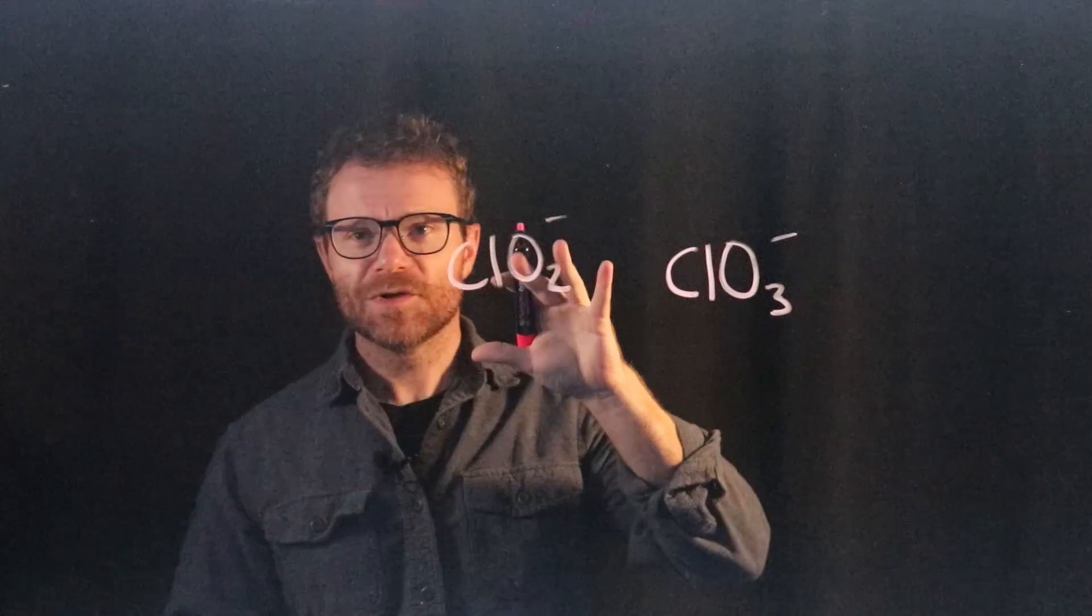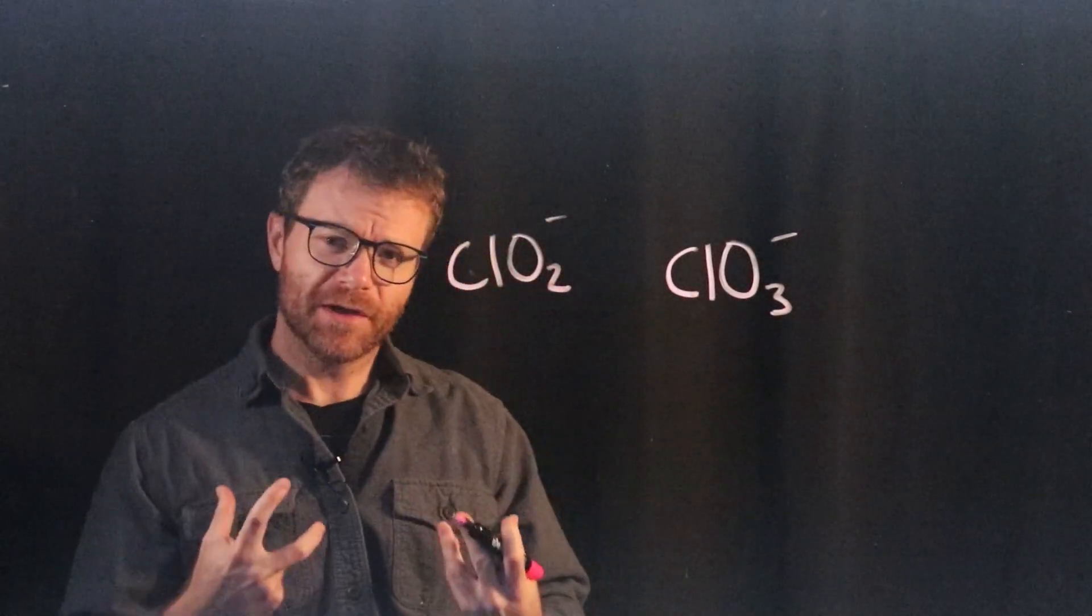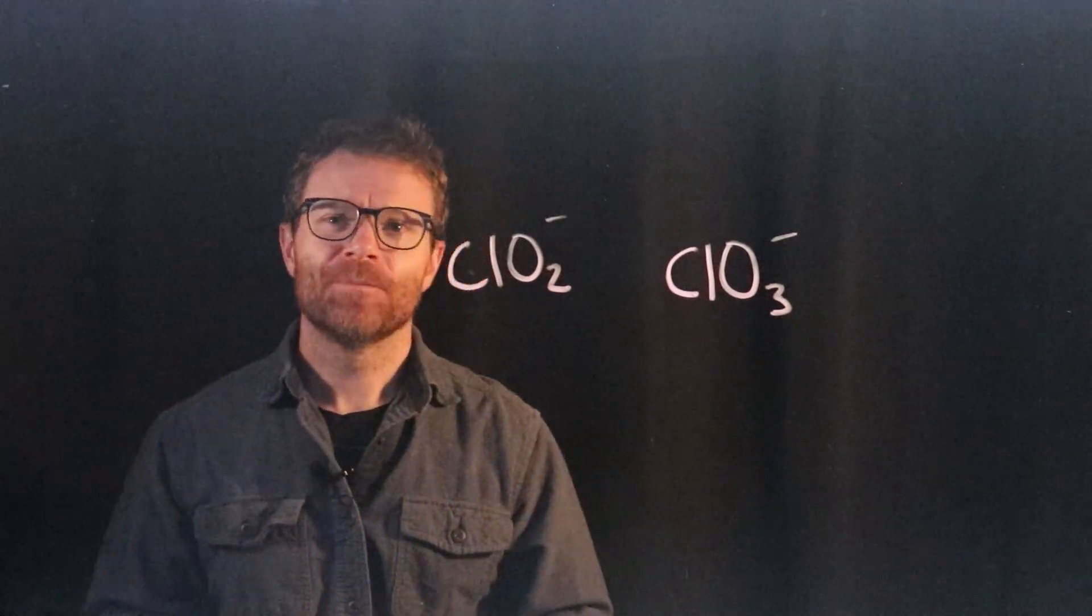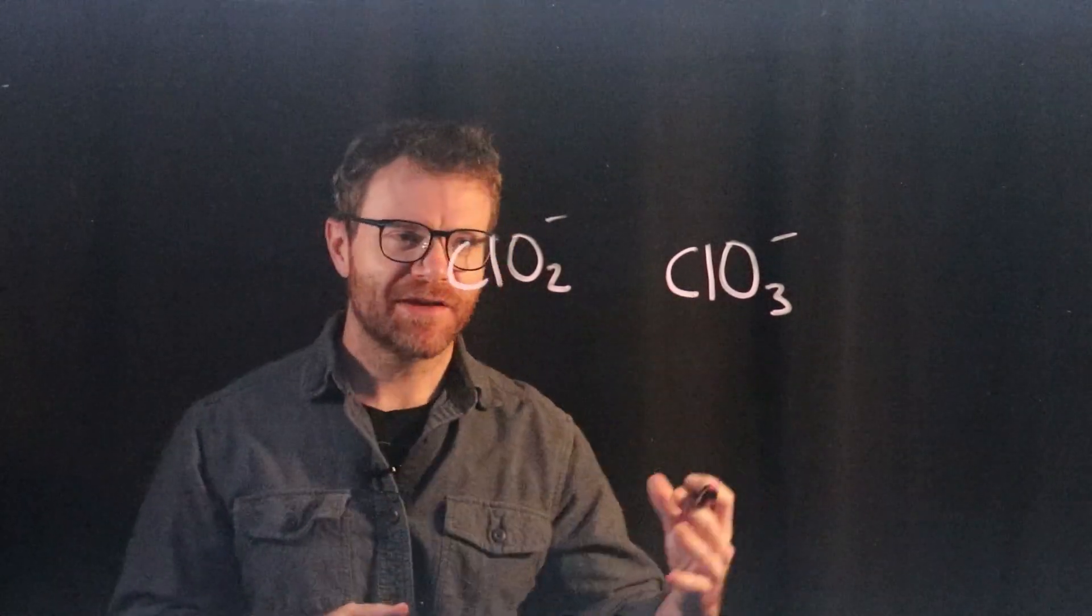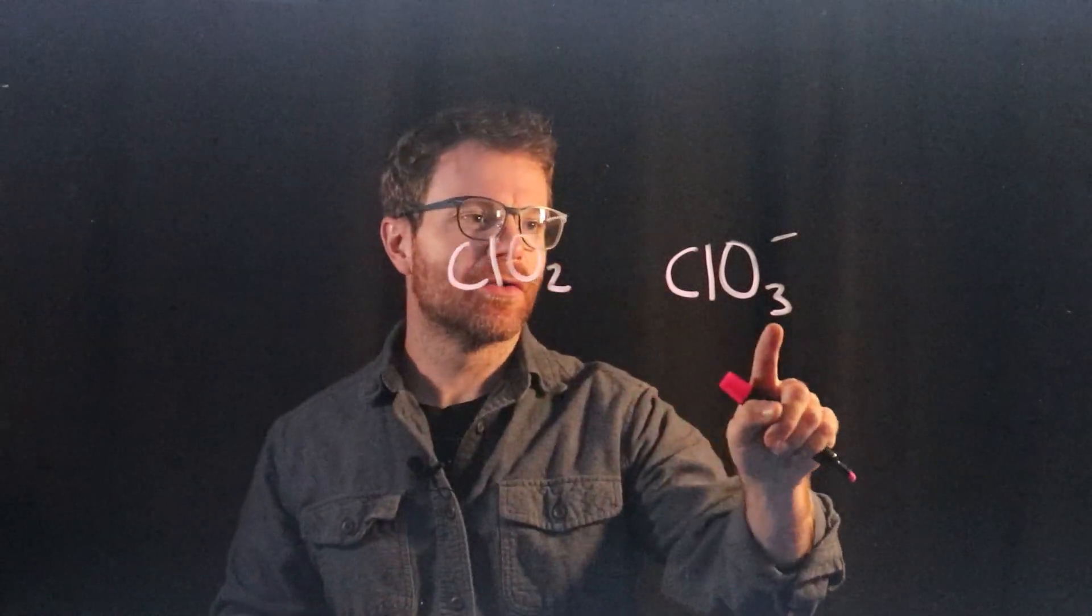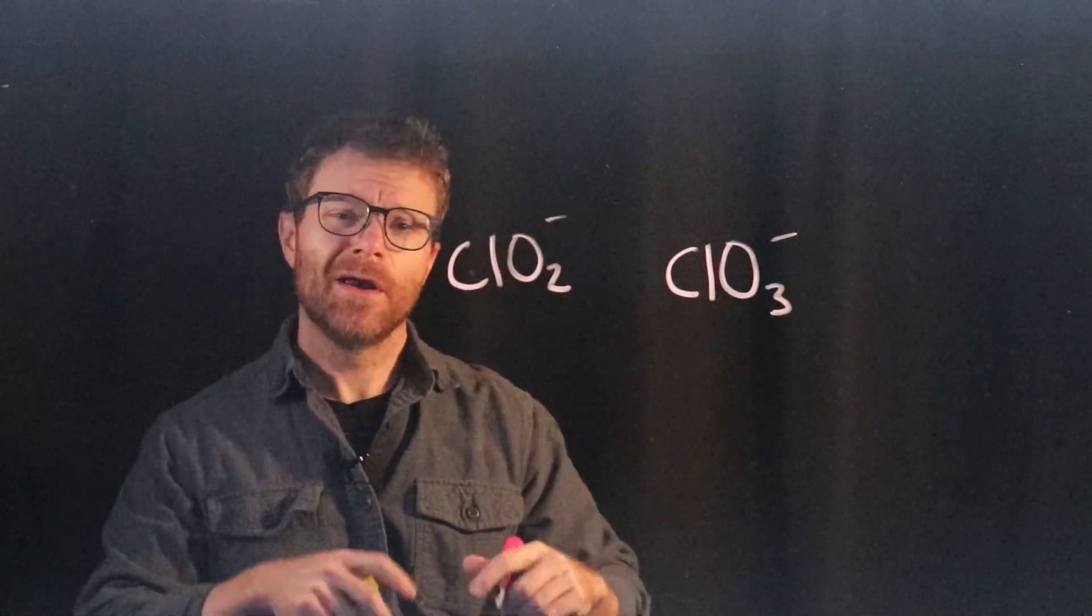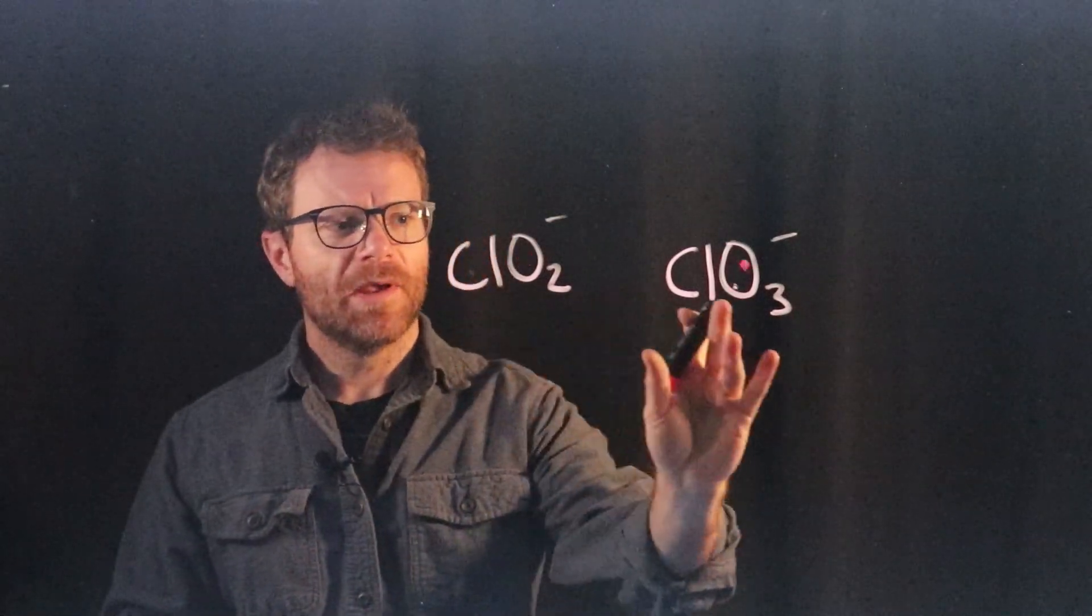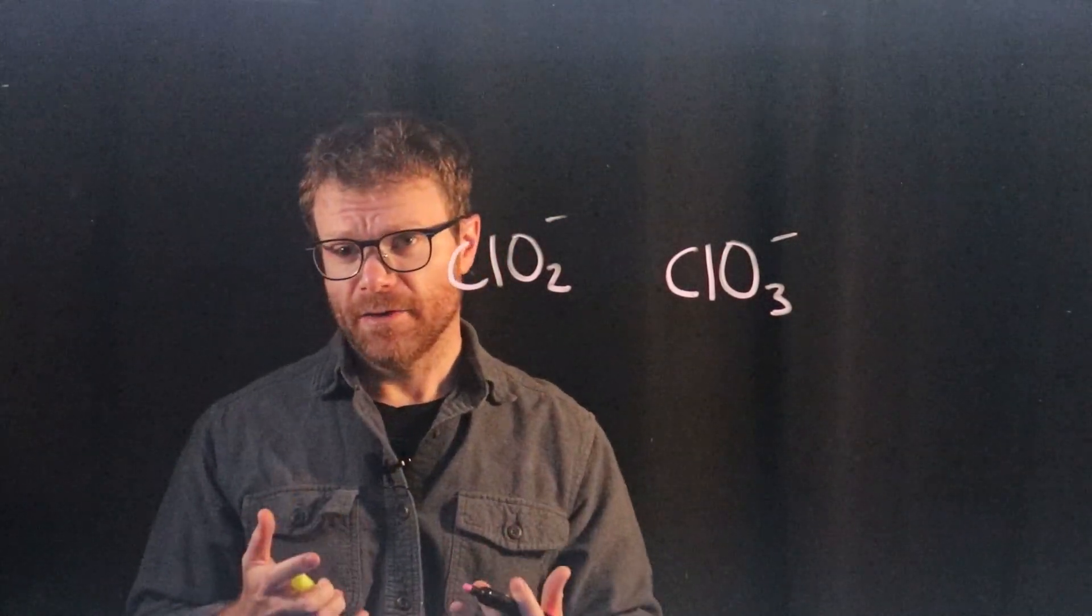We'll do just one last example with the halogens to really understand how to name these polyatomic anions, such as sulfate, phosphate, etc. Here you'll see ClO2 with a minus charge and ClO3 with a minus charge. Take a moment, remember everything I just talked about, and see if you can name these two polyatomic ions.